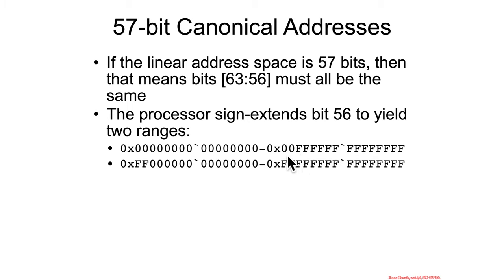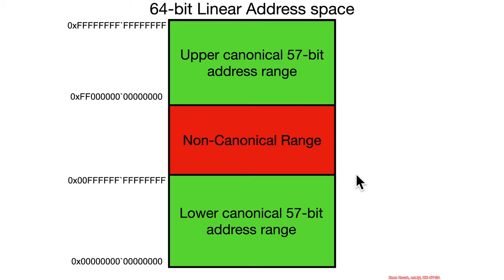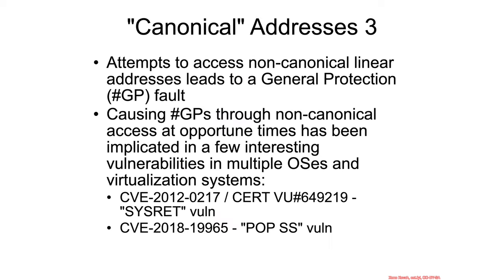You can see the difference: for 48-bit it was 0000 followed by seven Fs, whereas here for 57-bit it's 00 and then all Fs. The upper range starts at FF 0000 all the way up to all Fs. So the 57-bit space uses more of the 64-bit address space — both ranges are wider — but there are still some addresses in the middle that are not valid.